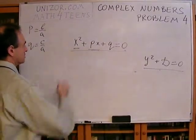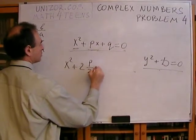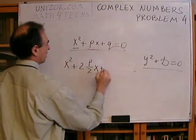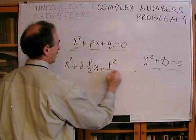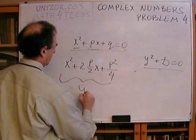I will use this to have X squared plus 2P over 2X plus P squared divided by 4. And this will be my Y squared.